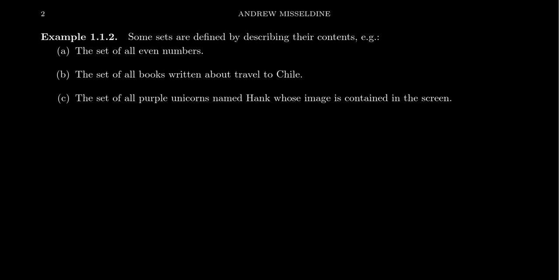The objects of this set are books — specifically books about this topic. We can decide whether a book belongs to this set or not. For example, a book like 'Top Ten Tourist Traps of Chile' belongs here. But our textbook for this class, 'The Book of Proof,' would not belong to the set — that's not about travel to Chile. We have to be able to decide whether something belongs or not, and our textbook does not belong to this set.